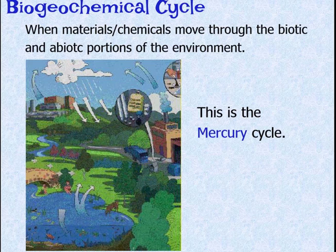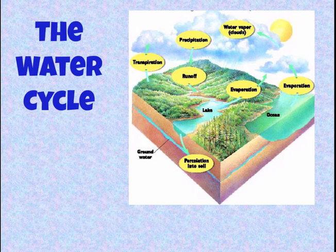This is a diagram of the mercury cycle — who knew there was a mercury cycle? Today we're going to talk about three cycles that are important for you to know: the water cycle, the carbon cycle, and the nitrogen cycle.